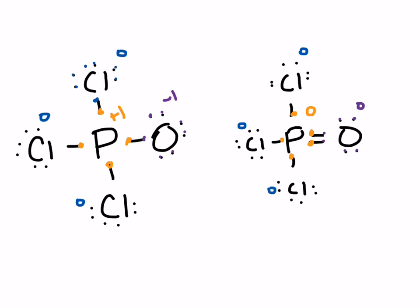The structure on the right has fewer formal charges than the one on the left — both add up to zero overall, but the right one is the better structure. Counting the total valence electrons around phosphorus in that structure: two, four, six, eight, ten — it's breaking the octet rule. But for elements in the third row or lower, that's allowed because they have d orbitals available, giving more space for bonding electrons. This lesson on formal charge should help you calculate formal charges and determine the best possible structure.